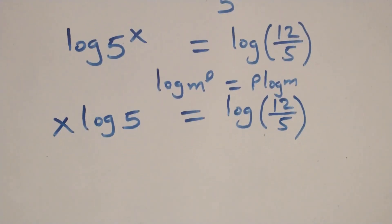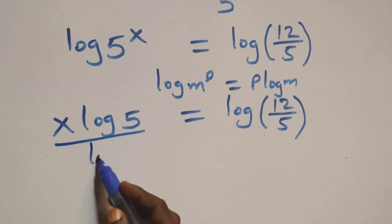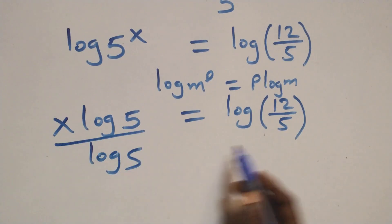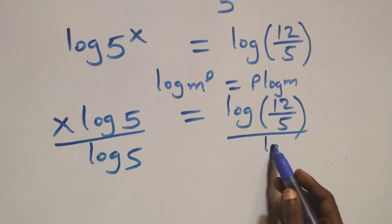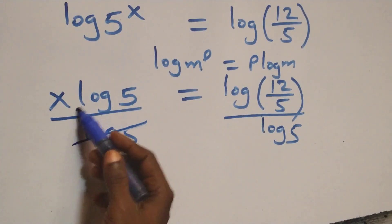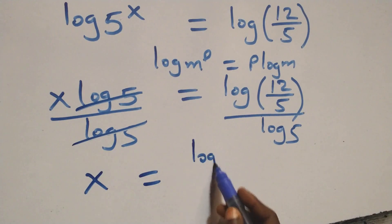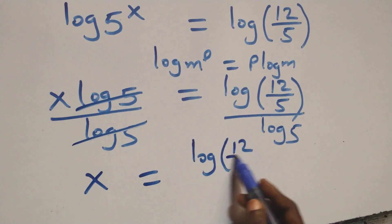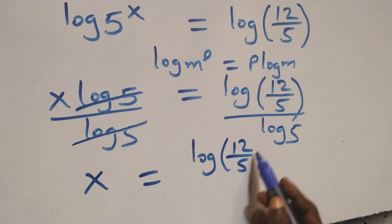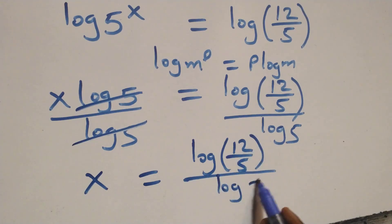We divide both sides by log 5 — divide this side by log 5 and also divide the other side by log 5. The log 5 terms cancel, giving us x equals log(12/5) divided by log 5.